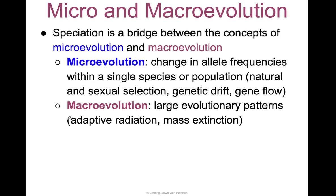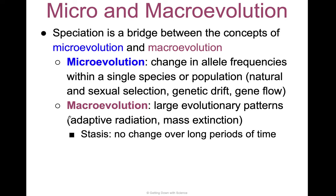Macroevolution involves huge evolutionary patterns — things like a mass extinction or adaptive radiation, which we'll talk about. When there is no change over a long period of time, we say that the species is in stasis.